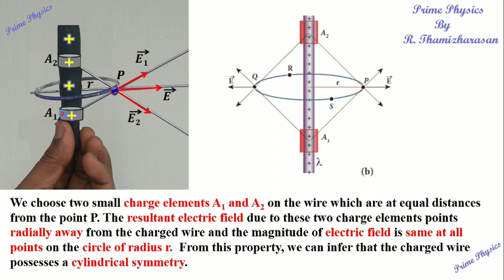This unit length has areas a1 and a2. This unit is a charge element on the charged wire. Point P — this unit length is perpendicular. The electric field at point P is in the perpendicular direction.